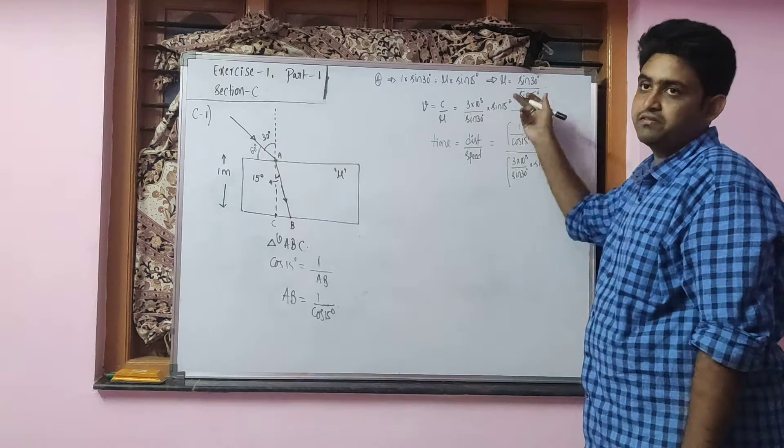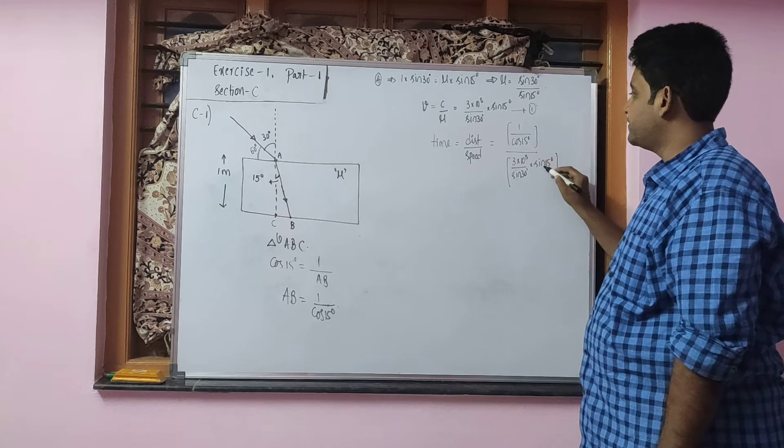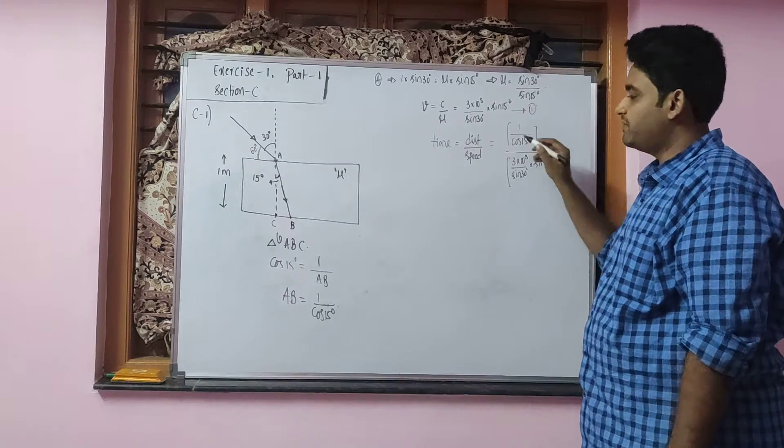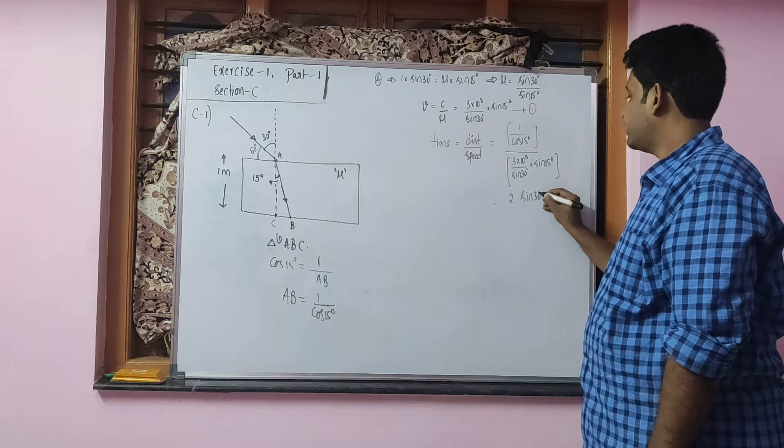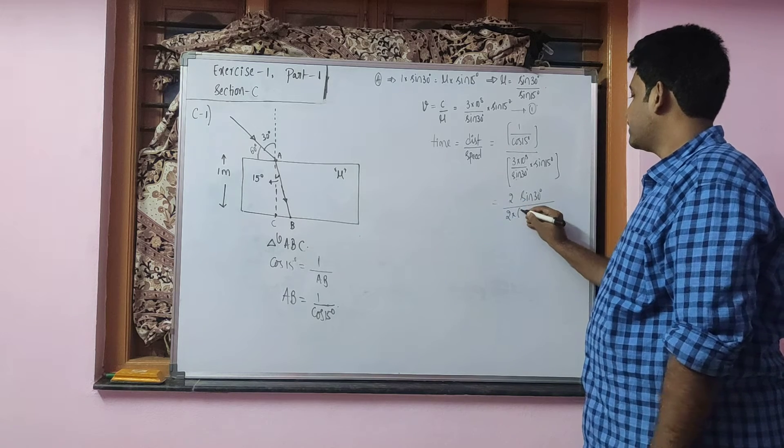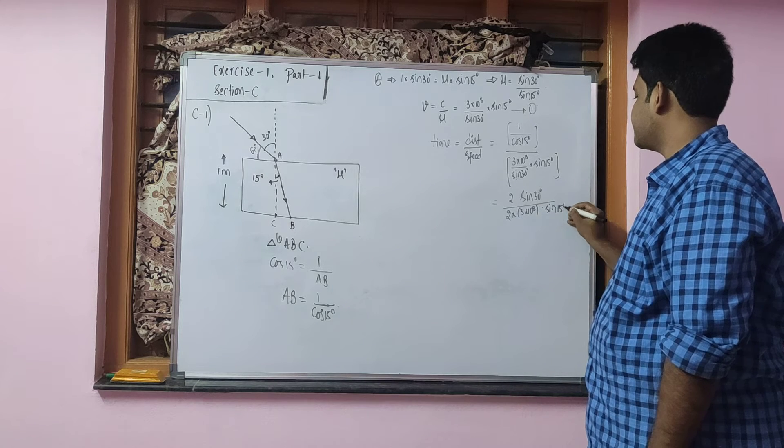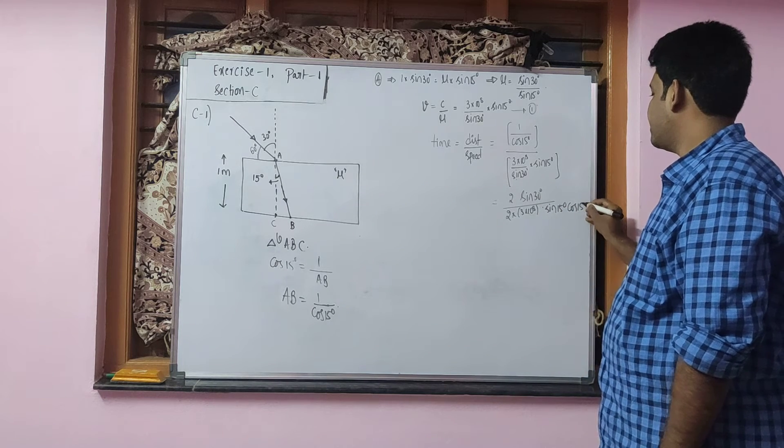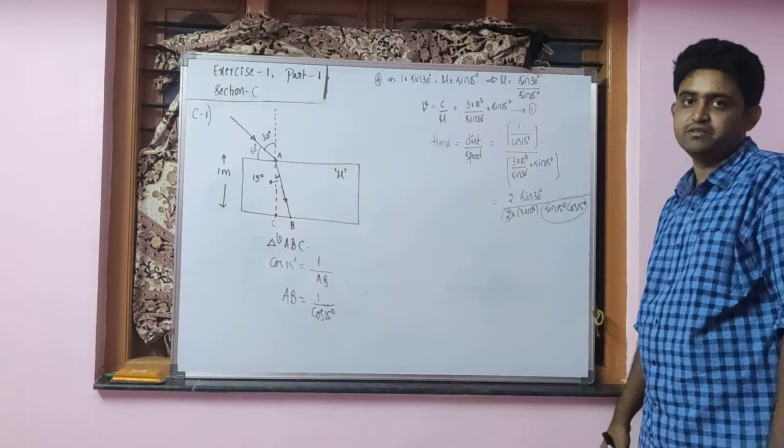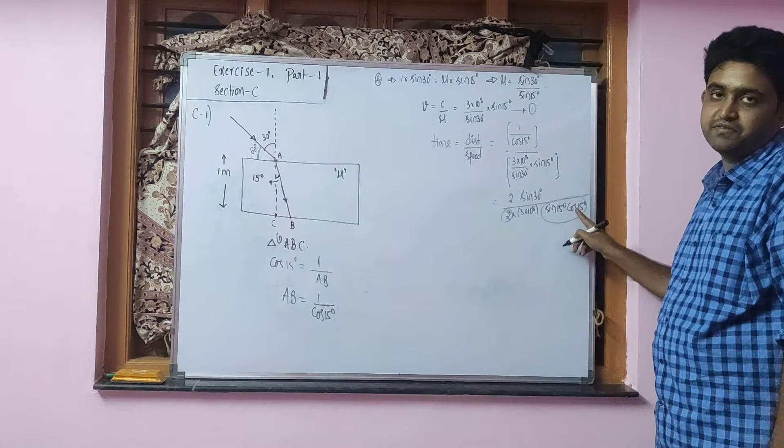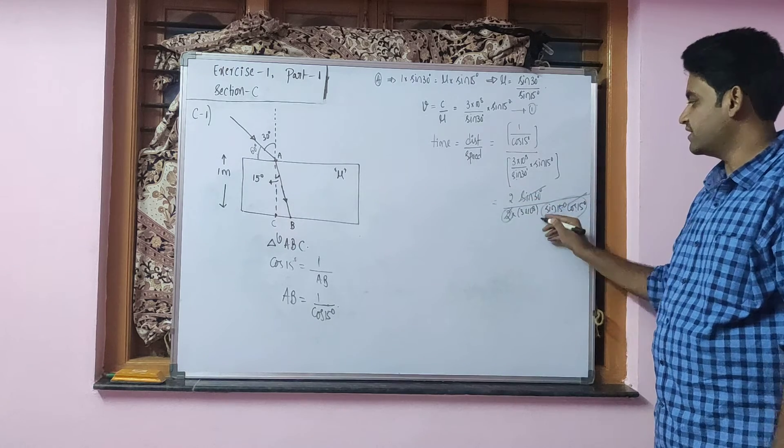That sine 30 will go to the numerator. In the denominator if you see C into sine 15 into cos 15 will be there. If I multiply and divide this total thing with 2 I will end up like this: 2 sine 30 divided by 2 into 3 into 10 power 8 into sine 15 into cos 15. We know that 2 sine 15 cos 15 is nothing but sin 30. So here also there is sin 30 and here also there is sin 30, I can cancel it out.